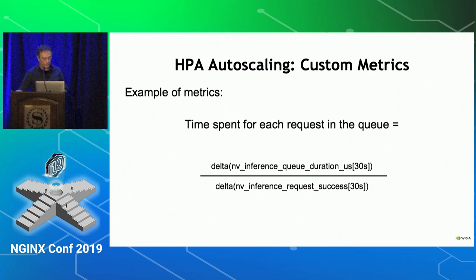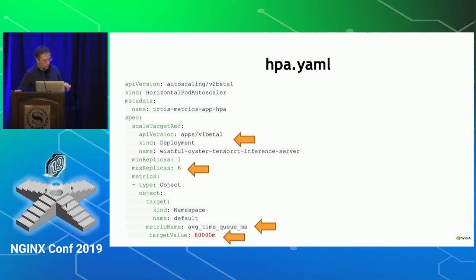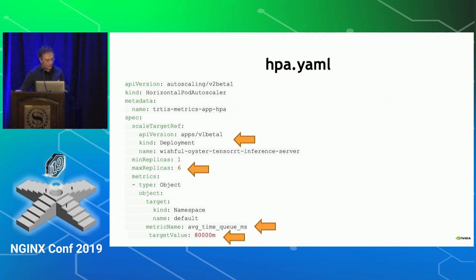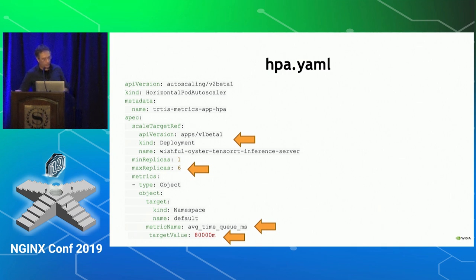The metric is expressed in PromQL format. When you deploy the HPA, you specify which deployment you are targeting — in our case the TensorRT inference server — and how many maximum replicas you want. We want six because we have only six GPUs. You specify the metric on the bottom: average queue time in milliseconds with a desired value of 80ms. Each time the HPA reads a value that doesn't match 80 milliseconds, it will increase or decrease the number of replicas.